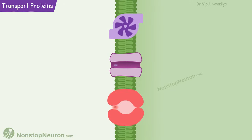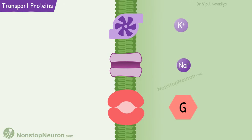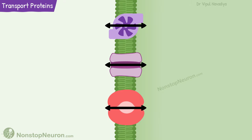Transport proteins create a passage in the membrane for the movement of such substances. All transport proteins are transmembrane — meaning they go through and through the membrane — because they have to create a through-and-through passage. There is no other option.